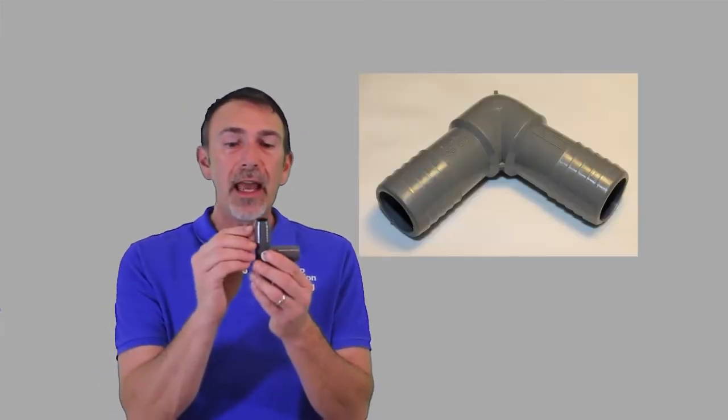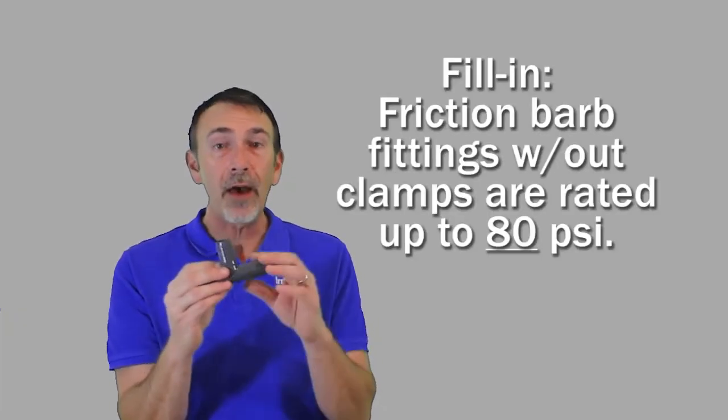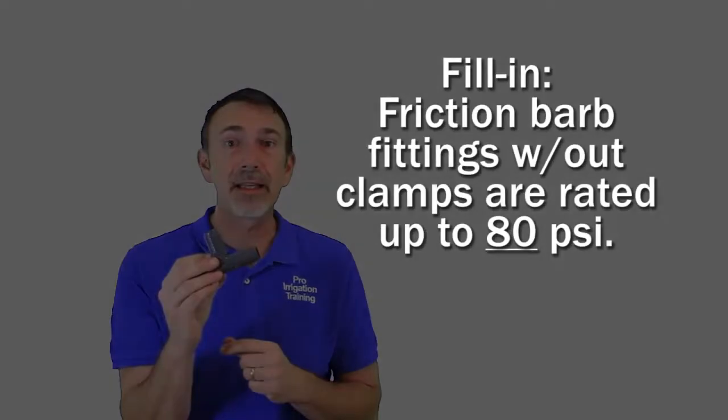Now, the fittings that we use here are called friction barbs, and they have little sharp edges on them, not sharp enough to cut your fingers, but sharp enough to grab hold of the inside of the polyethylene pipe and keep it from pulling out. Now, if you use these type of friction barb fittings without a clamp on the outside, they're good up to 80 PSI. So, if you're installing an irrigation system that has more than 80 PSI available to it, you're going to want to either use the clamps that hold this in place, or you're going to want to use a pressure reducing valve on the system to bring the overall pressure down.